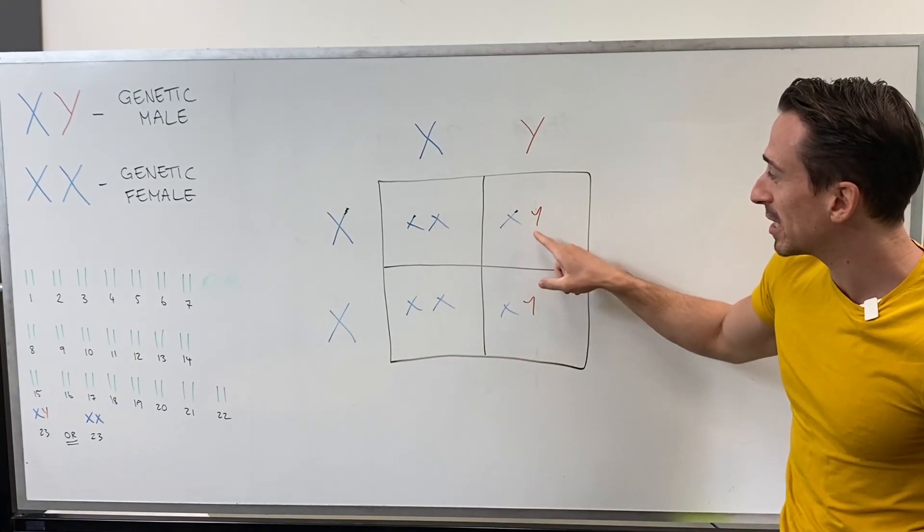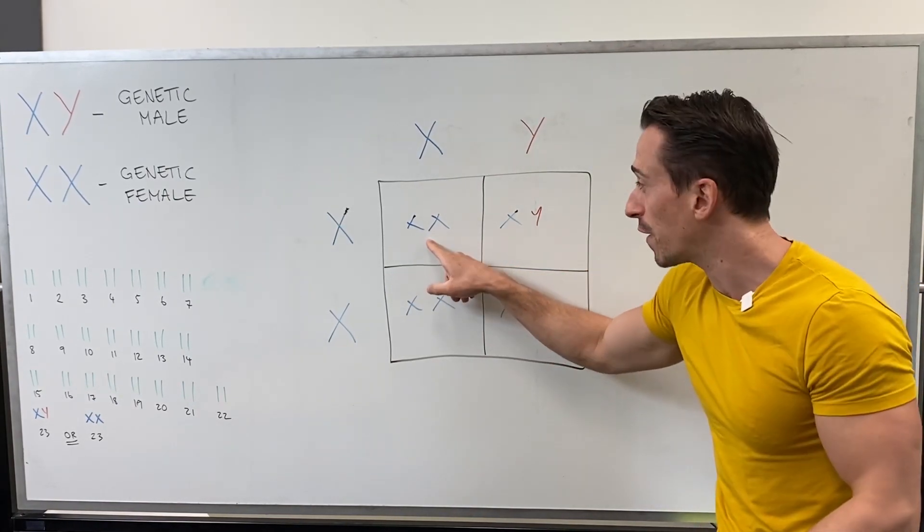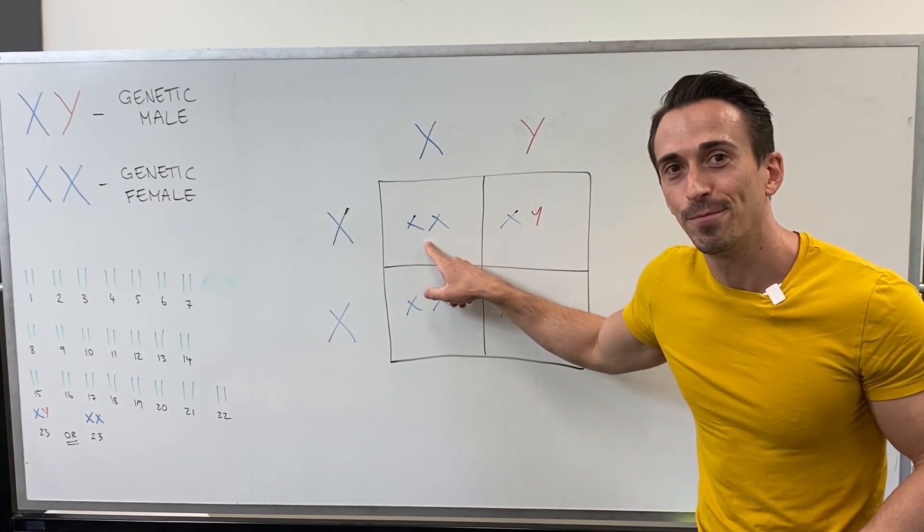So that means this male will have haemophilia, but this female will not. This female will be a carrier. Does that make sense?